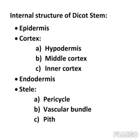Epidermis is the outermost layer. It is made up of a single layer of parenchyma cells. Its outer wall is covered with cuticle, which is a waxy layer. It is protective in function. You should remember that in dicot and monocot root, cuticle is absent — it is present in dicot stem epidermis.